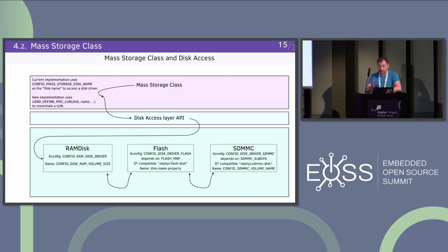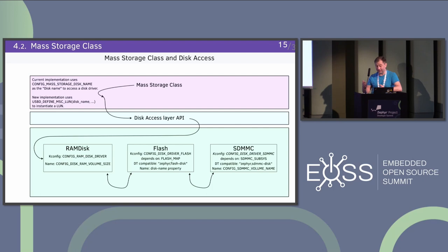By flash I mean raw NOR flash — either on the SoC or on external flash. Finally there is MMC, which you can use with a SPI driver or a specific controller. Usually with SDMMC, even with the new support, you can't use multiple instances because there's one Kconfig option defining the volume name. Since the mass storage class uses names to identify the disk, you can't have more than one. That's one of the issues we have to fix.